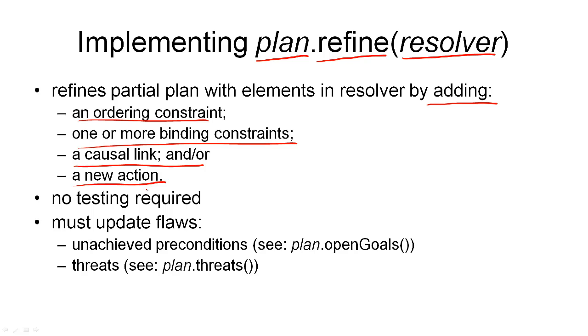In general, we have to make sure that our constraints that are maintained in the plan are consistent, but this is not required here. This is the case because our function that computes the resolvers for a given flaw already took care of that. So we never consider resolvers that would make our variable binding or ordering constraints inconsistent.